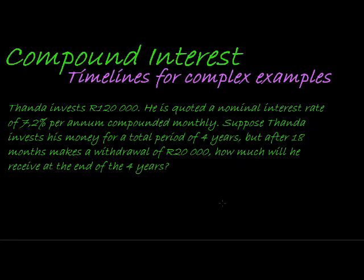This is a typical example of exactly what we've been talking about, changes happening during an investment time. Here we have Tanda again and we're told that Tanda invests 120,000 Rand, he's quoted a nominal interest rate of 7.2% per annum compounded monthly. Suppose Tanda invests his money for a total period of 4 years, but after 18 months makes a withdrawal of 20,000 Rand. How much will he receive at the end of 4 years?